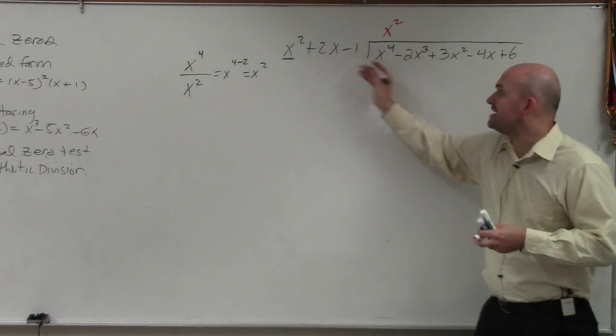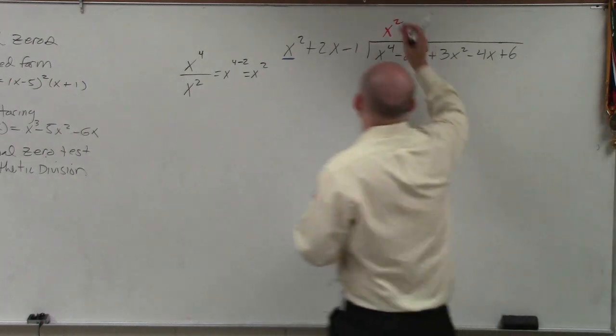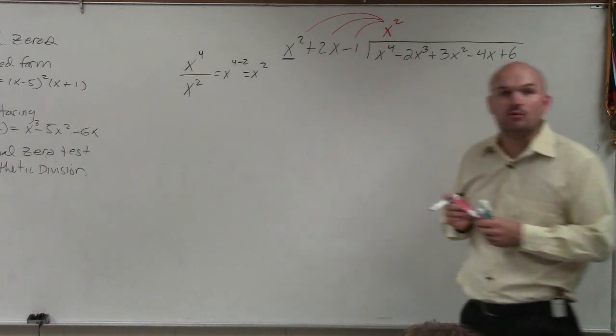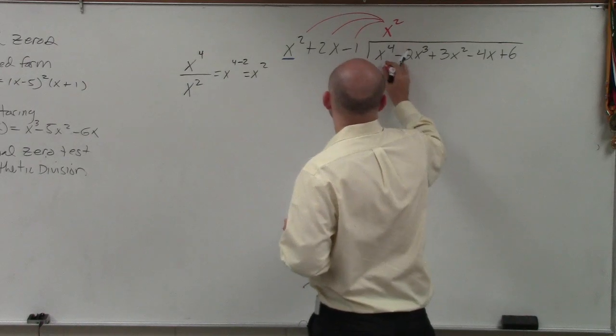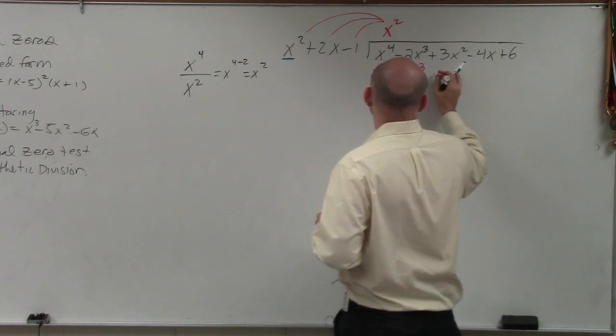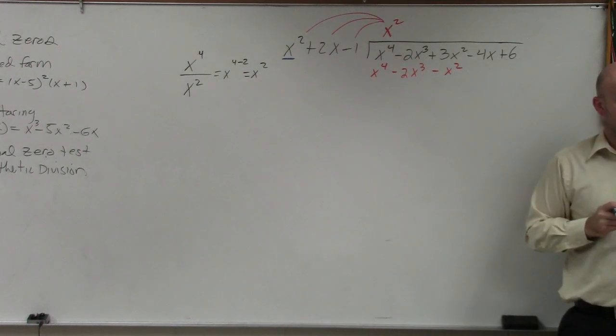Now, since my divisor has three terms, I have to multiply that portion of my quotient times every single one of them. So when I multiply every single one of them, I now get x to the fourth minus 2x cubed minus x squared. Does everybody see that?